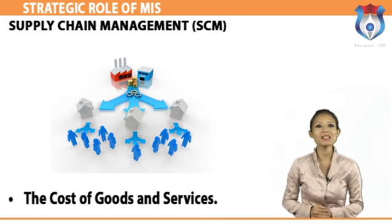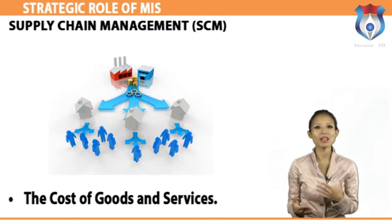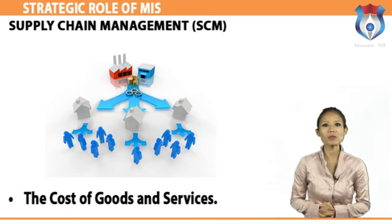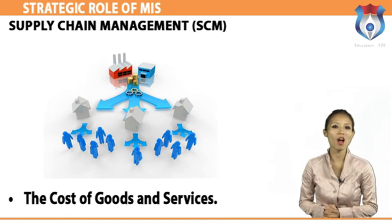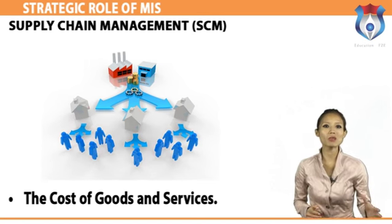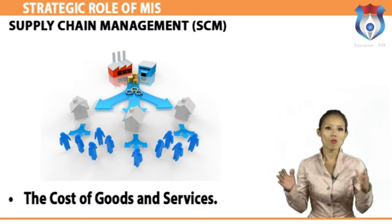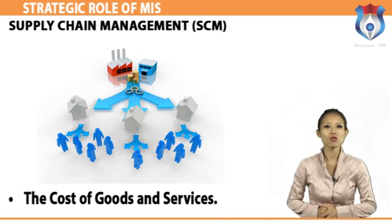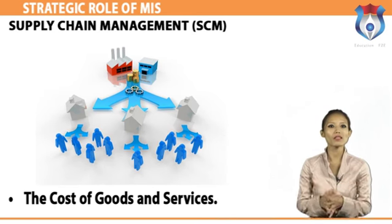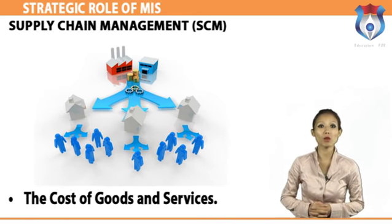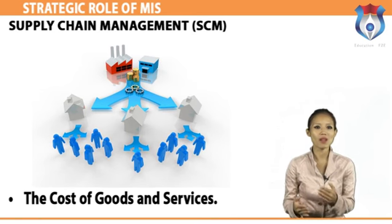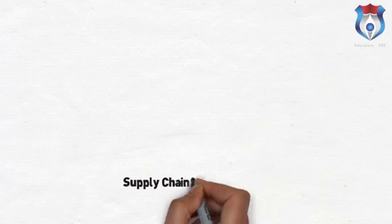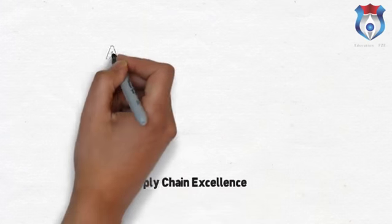Let us discuss supply chain management — SCM. All businesses must add cost to goods and services. Raw materials are just one component; goods must be harvested or manufactured, then boxed, wrapped, and shipped to distribution centers where they are moved, stored, and displayed or sold. Each step of the process requires human involvement, so salaries must be paid, and rents, utilities, and insurance add to the cost of goods. Supply chain excellence is a competitive differentiator across industries.